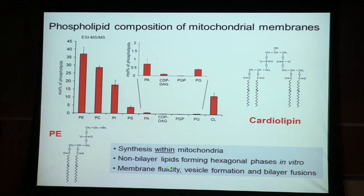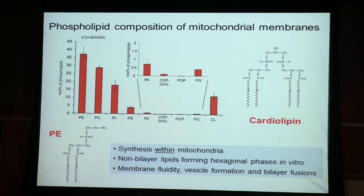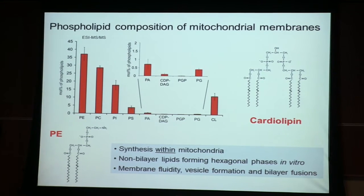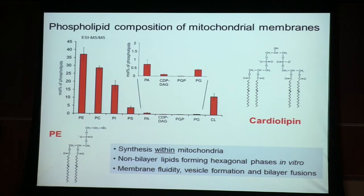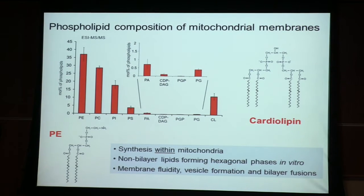Cardiolipin is a specific lipid because it's a so-called non-bilayer lipid — it forms hexagonal phases in vitro. If you reconstitute liposomes in vitro with cardiolipin, it doesn't arrange in bilayers but forms hexagonal phases. In vivo, many functions are associated with cardiolipin that have to do with membrane fluidity, membrane fusion and fission. In other cellular membranes that do not contain cardiolipin, phosphatidylethanolamine fulfills this function. Both are known non-bilayer lipids thought to help membrane reshaping processes.